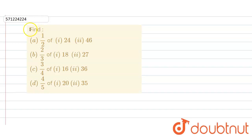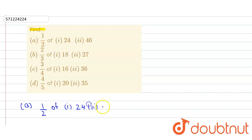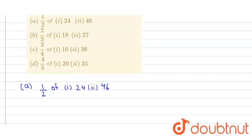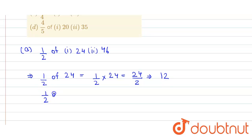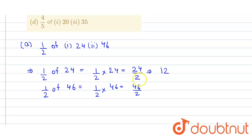In the given question we have to find the following. The first part is 1/2 of two subparts: 24 and 46. So 1/2 of 24 is 1/2 into 24, which equals 24 divided by 2, and here we get 12. Similarly, 1/2 of 46 is 1/2 into 46, that will be 46 divided by 2, and here we get 23.